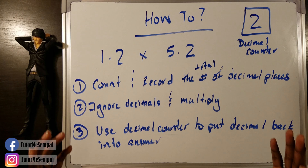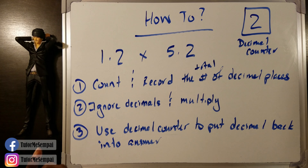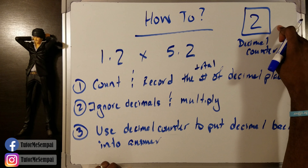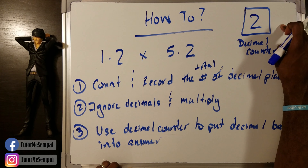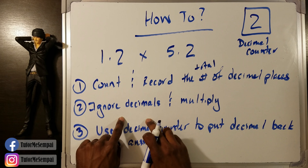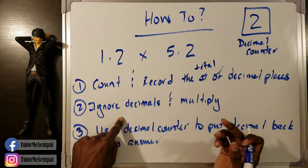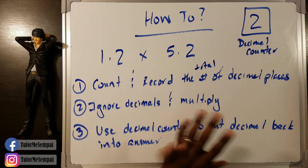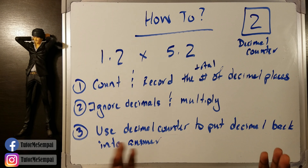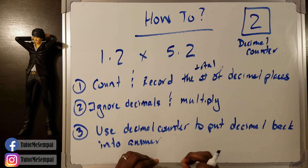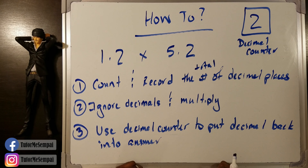So let's go over this again. We have three steps. First, we count and record the total number of decimal places and put that aside. We counted them — we have two. Now we ignore and multiply. Once you have your answer, you're going to use your decimal counter in order to put the decimal back into your answer. Then you're done.